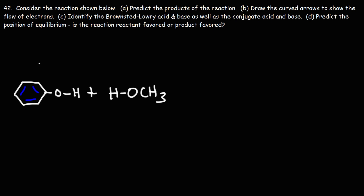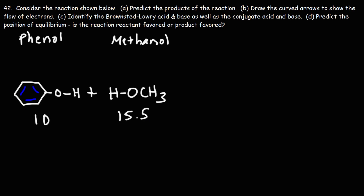On the left we have phenol; on the right we have methanol. The pKa of phenol is about 10; for methanol it's 15.5. So phenol is more acidic than methanol because it has a lower pKa value — it's the stronger acid. Therefore, phenol is going to act as the Brønsted-Lowry acid.